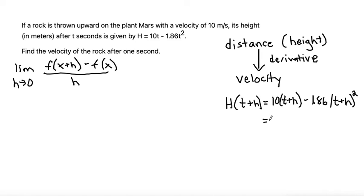Distributing my 10, I get 10t + 10h, and I'm going to subtract 1.86 times - because I have two terms that are squared, I need to write them out separately and distribute. So (t+h) times (t+h), I'm going to distribute that.